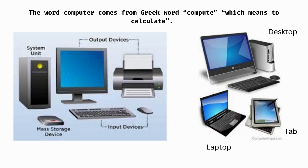If you look at the desktop, there is a monitor, a system case and cabinet, and a keyboard and mouse. There is also a tab and laptop. If you look at the image, there is a monitor and printer as output devices, a mouse and keyboard as input devices, a system unit, a mass storage device, an external hard disk, and a USB hard disk.